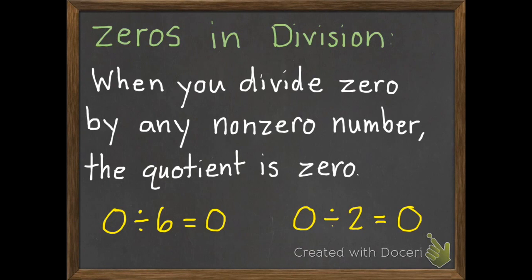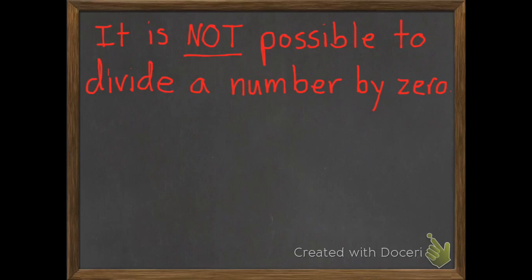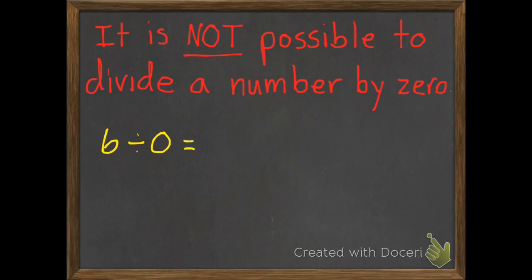So why do we say by any non-zero number? Let me get my red pen out. It is not possible to divide a number by 0. So if we have 6 divided by 0, we can't do that — it's not possible. If I have 6 apples, I can't put them in 0 places or give them to 0 people or put them in 0 groups. They have to be at least somewhere, in one group. So it just doesn't work. 6 divided by 0 is not possible.